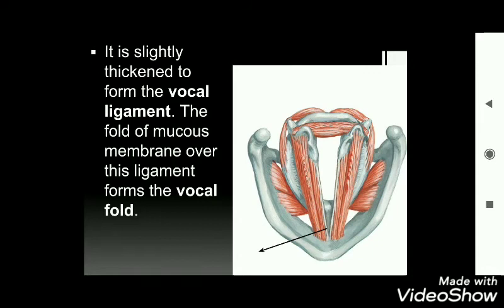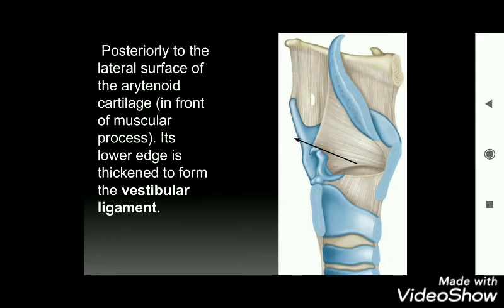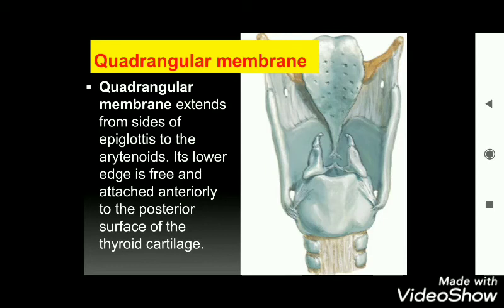The crico-vocal membrane is slightly thickened to form the vocal ligament, and the fold of mucous membrane over this ligament forms the vocal fold. The vocal ligament is made of yellow elastic tissue and extends anteroposteriorly from the posterior surface of the thyroid cartilage to the vocal process of the arytenoid cartilage.